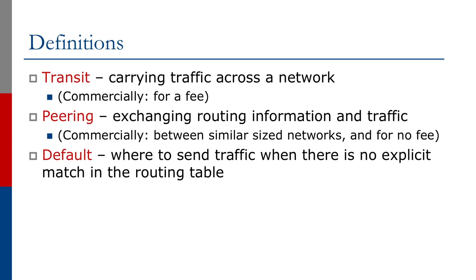Larger ISPs can sell transit to smaller ISPs. The smaller ISPs can choose who to buy transit from. They may buy transit from multiple providers for extra capacity or for redundancy, and they choose their transit providers based on different criteria such as cost, reliability, and which transit providers are available in particular locations. Transit is very much a supplier-consumer relationship.